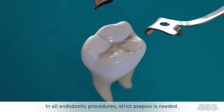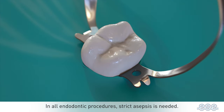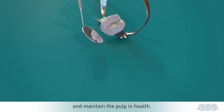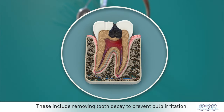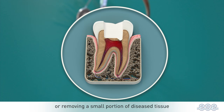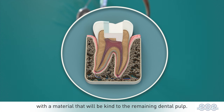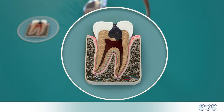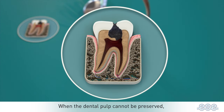In all endodontic procedures, strict asepsis is needed. Vital pulp treatments aim to relieve pain and maintain the pulp in health. These include removing tooth decay to prevent pulp irritation, or removing a small portion of diseased tissue before sealing the tooth with a material that will be kind to the remaining dental pulp.